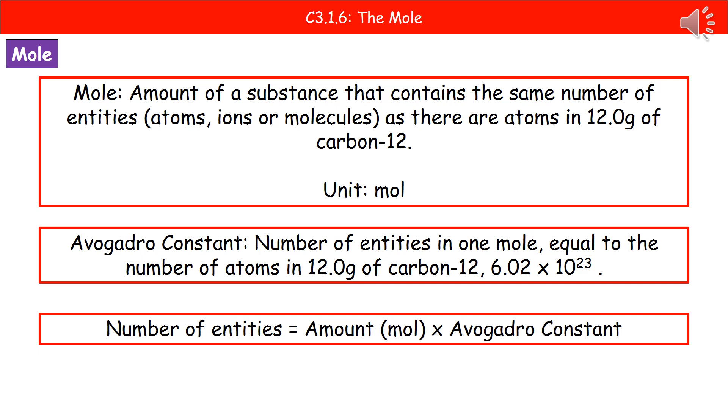So the first one that we're going to look at is the actual word mole. Now in chemistry when we talk about the mole we're not talking about a small furry animal that's digging underground. What we're actually talking about is the amount of a substance that contains the same number of entities, and by an entity we're referring to an atom, an ion or molecule, as there are atoms in 12 grams of carbon-12.